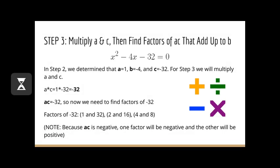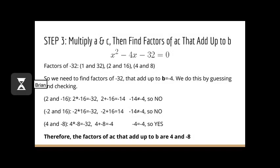For step 3, we will multiply a and c. So 1 times negative 32 equals negative 32. We need to find factors of negative 32 that add up to b, which in this case was negative 4. The factors of negative 32 are 1 and 32, 2 and 16, and 4 and 8. Note that because a times c is negative, one factor will be negative and the other will be positive. By guessing and checking, we can determine that 4 and negative 8 are the factors we need, because 4 times negative 8 equals negative 32, and 4 plus negative 8 equals negative 4.